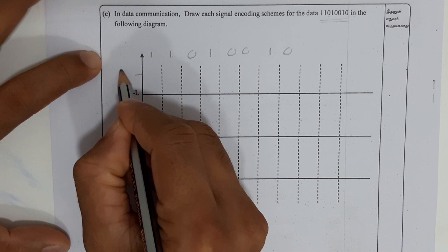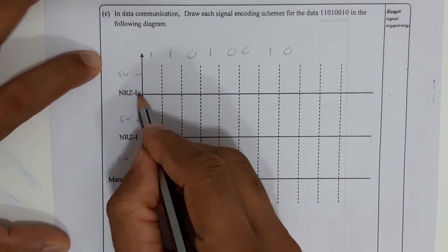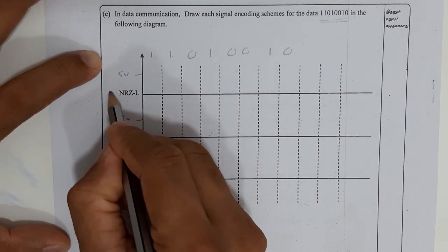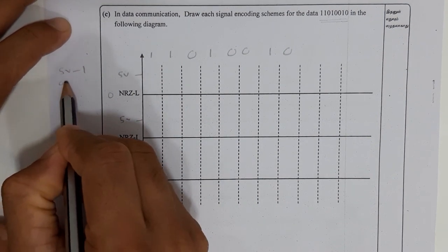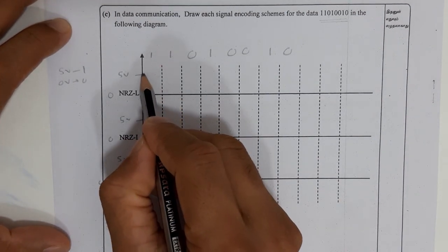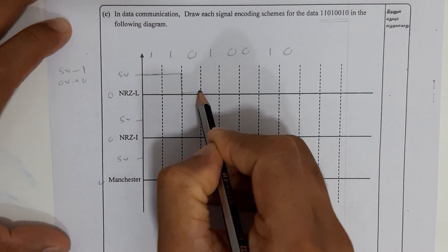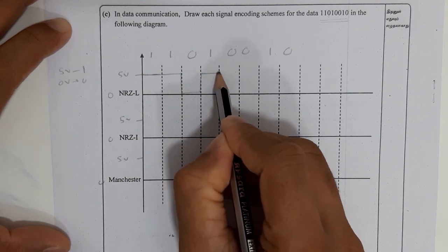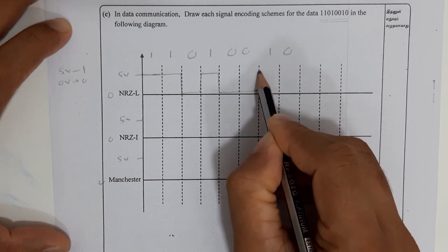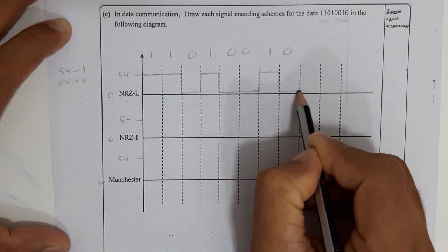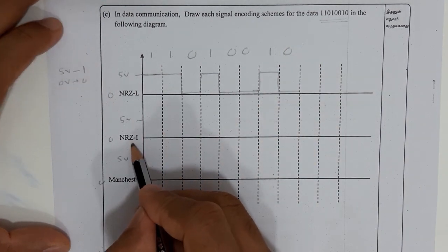I mark the higher voltage (5 volts) positions on the diagram since all three encoding schemes are drawn in the same diagram. This is the 0 volt position. For NRZ-L: higher voltage represents 1 and lower voltage represents 0. For bit 1, maintain higher voltage; another 1, higher voltage; 0, lower voltage — bring it down; then 1, higher voltage; next 0, low voltage; again 0, low voltage; then 1, higher voltage — change and continue.